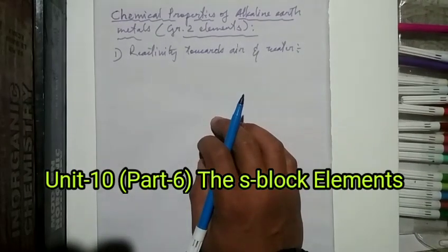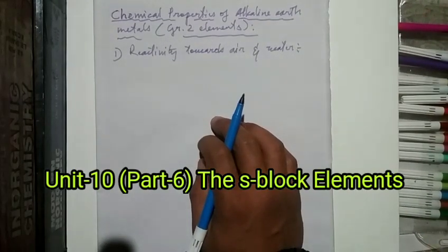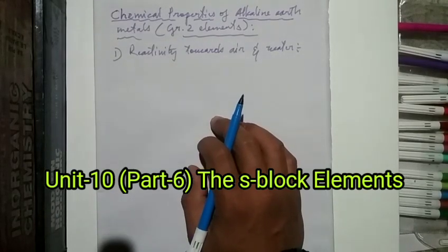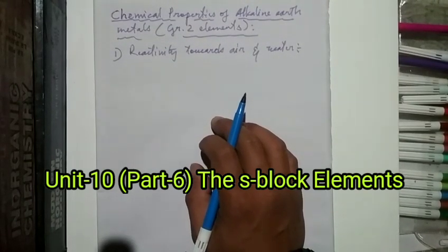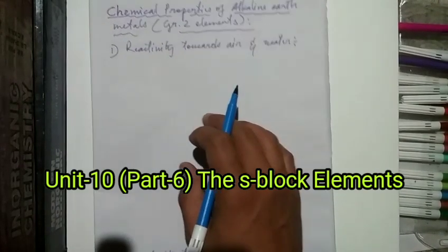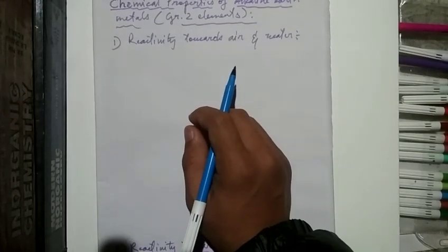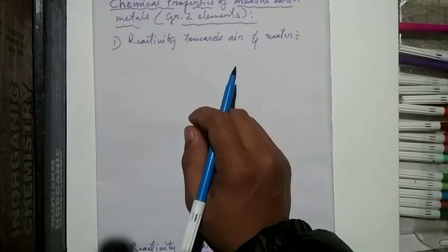Today our discussion will be on chemical properties of alkaline earth metals or Group 2 elements. Firstly, reactivity towards air and water. Except for beryllium and magnesium, the rest of the alkaline earth metals react with air and water.